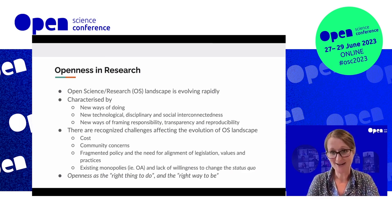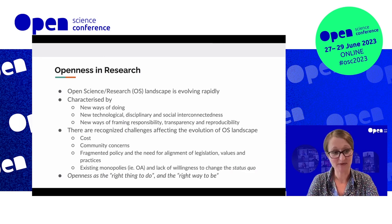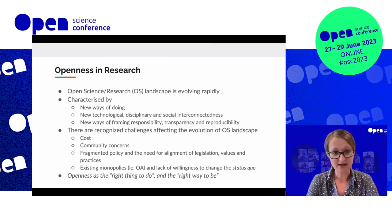Of course, while we recognize that things are changing very rapidly, we also recognize that there are challenges affecting the evolution of the Open Science Landscape, and these include the cost of building new infrastructures and embedding Open Science in research infrastructures. Community concerns mainly to do with issues of ownership and scooping of data. There is already fragmented policy and the need for alignment of legislation, values, and practices. And we also have to tackle existing monopolies, particularly in the publishing world, and a lack of willingness to change the status quo.